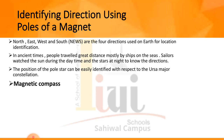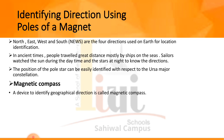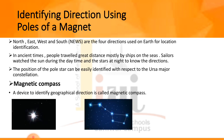People came to know the directional property of a freely suspended magnet as early as the discovery of the magnet. A freely suspended magnet will align toward the north pole — the geographical pole of the earth. Based on this property, devices were invented to identify geographical direction. This device is called a magnetic compass.